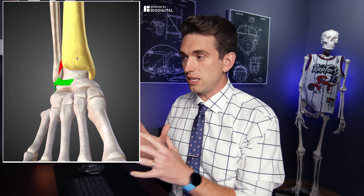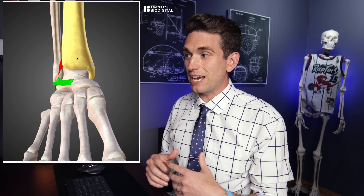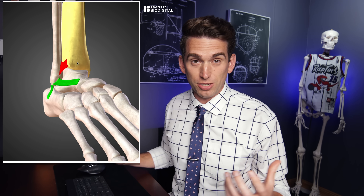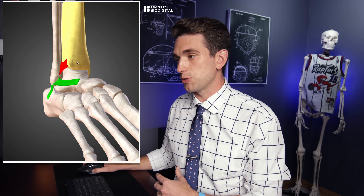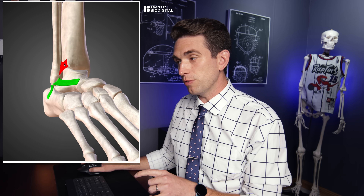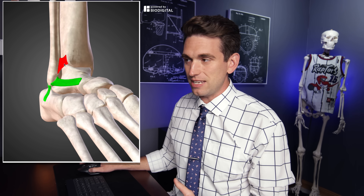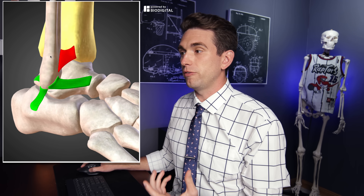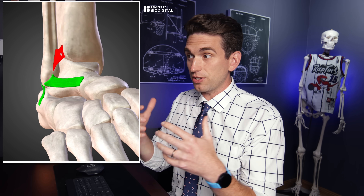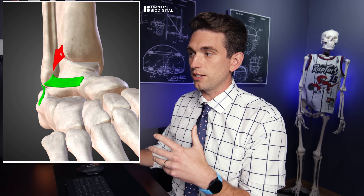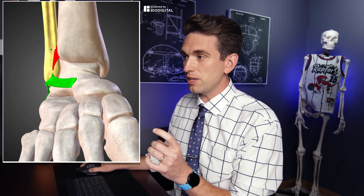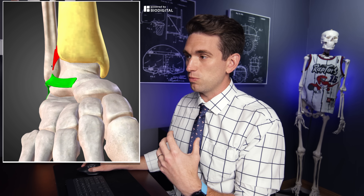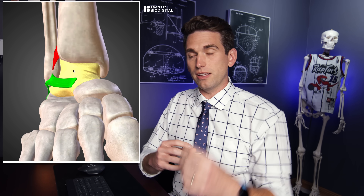One of the primary stabilizers keeping this joint in place is the syndesmosis — the high ankle sprain ligament traditionally thought of as being injured with a high ankle sprain. I have it highlighted here in red: it's the AITFL, or the anterior inferior tibiofibular ligament. These ligaments are like ropes holding these bones together, and by keeping the fibula and the tibia anchored together, you can see how they form this mortise surrounding the talus.